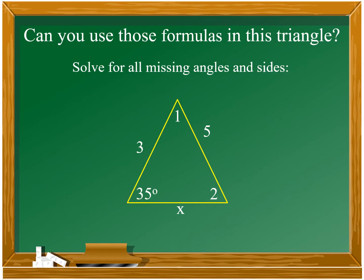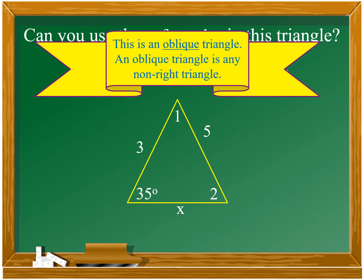Very good. Now, can you use those formulas in this triangle? The answer is no. But why? Because the Pythagorean theorem and SOH-CAH-TOA are only meant for right triangles, and this triangle is not a right triangle. And the third formula, we can only use that if two angles are given. But in this problem, only one angle is given. This triangle is what we call an oblique triangle — a non-right triangle, meaning there is no right angle.